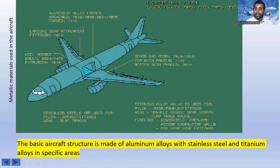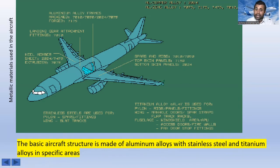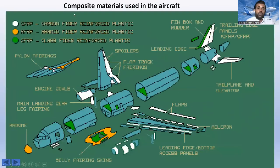The basic aircraft structure is mainly made of aluminum alloys, with stainless steel and titanium alloys used in specific areas. So while stainless steel and titanium alloy are used for specific locations, aluminum metal is the primary structural material. Now let's look at the composite materials used in the aircraft.